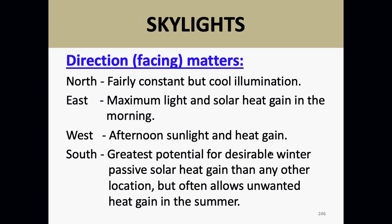If you have a skylight near a tree, thinking the tree will block the sun — what eventually happens to that tree? Someone's going to cut it down, it'll get old, it'll die, and leaves will fall all over that skylight. Installing a skylight and counting on a tree to shade it is not the best idea, because once that tree goes, it's about another 20 years before a new tree grows tall enough to provide shade.